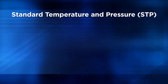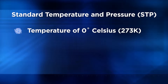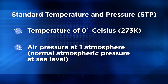We can only use this conversion factor when the temperature is zero degrees Celsius, which is 273 Kelvin, and air pressure is at one atmosphere, which is the normal atmospheric pressure on the Earth at sea level. These conditions are known as standard temperature and pressure, abbreviated as STP.